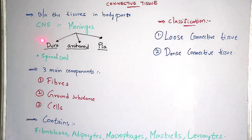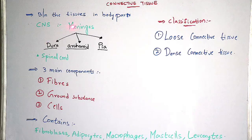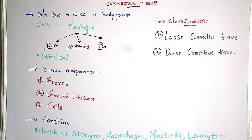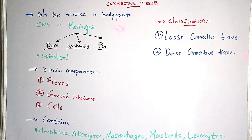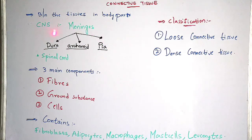For example, if you take the CNS — that is the central nervous system — normally the outer membrane of the central nervous system consists of meninges. There are three types of matter present in these meninges: dura mater, arachnoid mater, and pia mater. Between these three meninges there is a presence of connective tissue.